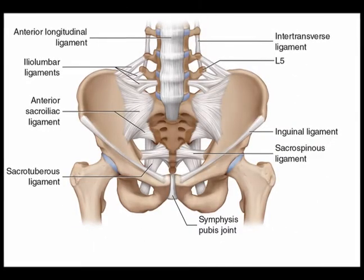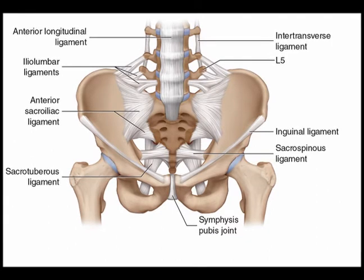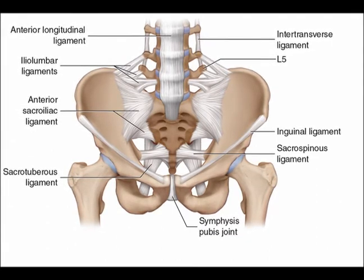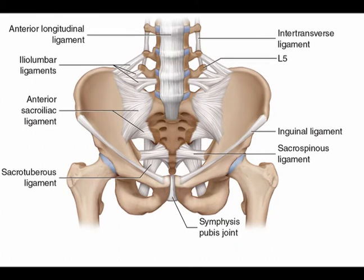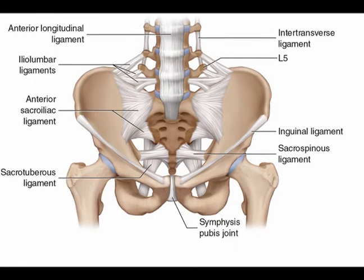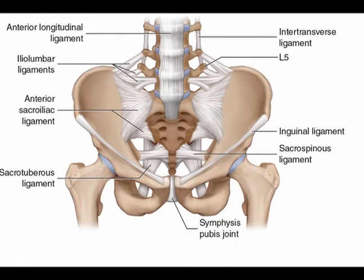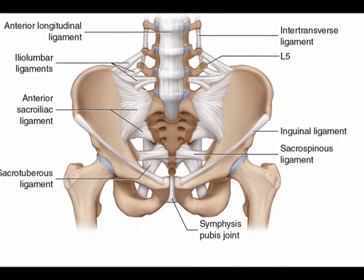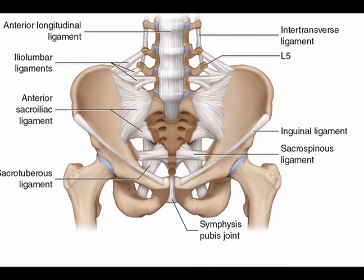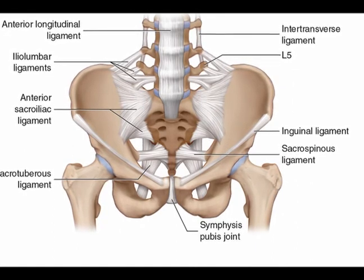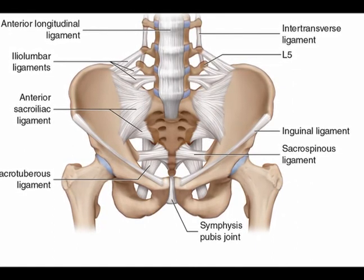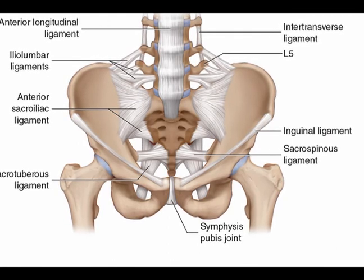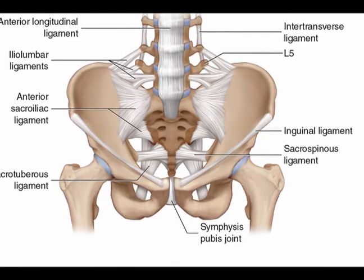The sacroiliac joint articulates the surfaces of the sacrum and the ilium. It functions as a transition between the spine and the pelvis. The main roles of the sacroiliac joints are to provide stability and offset the load of the trunk to the lower limbs. Stability of the joint is provided by an extensive architecture of ligaments.